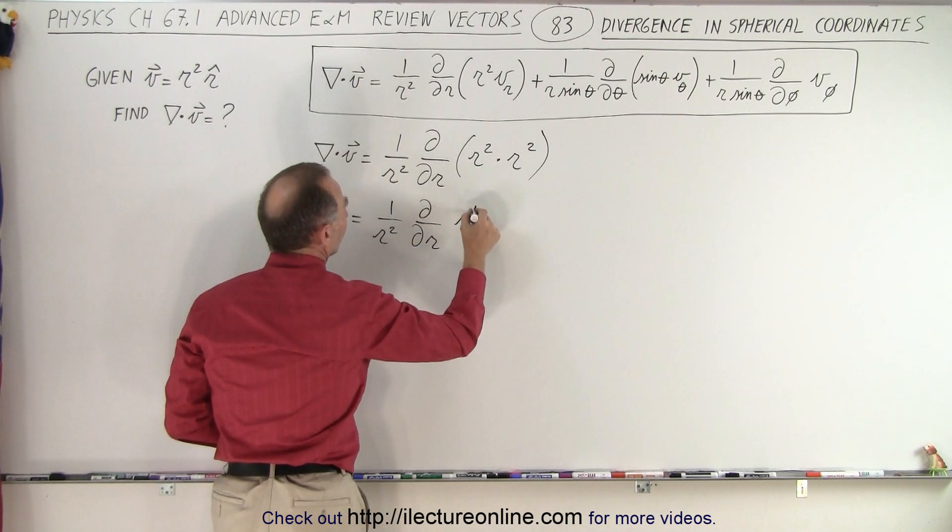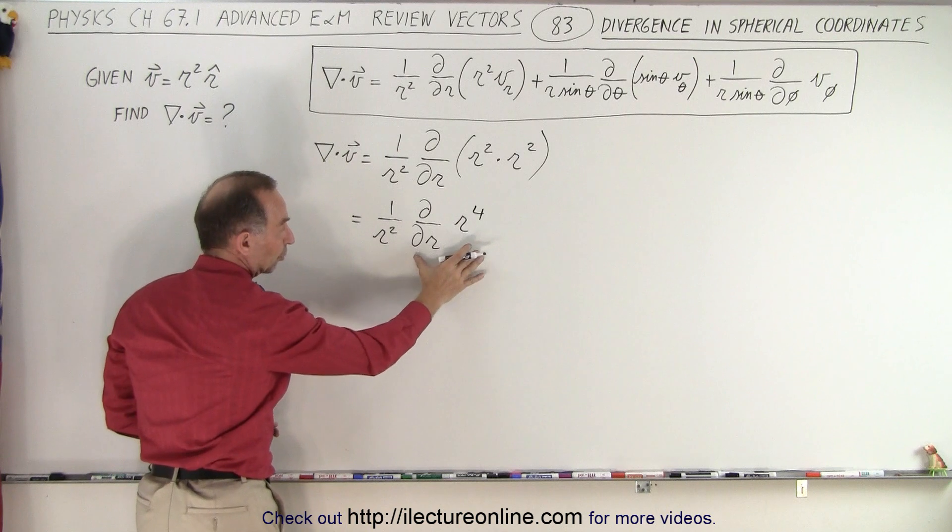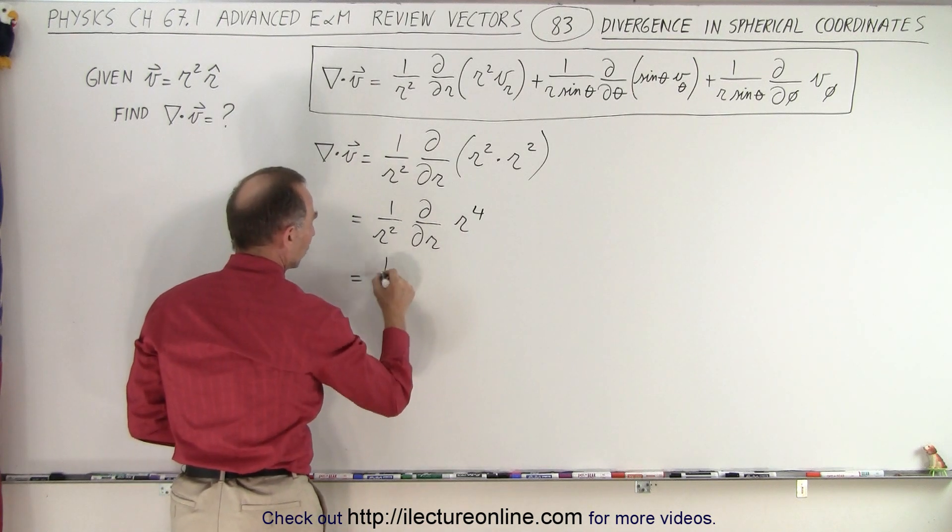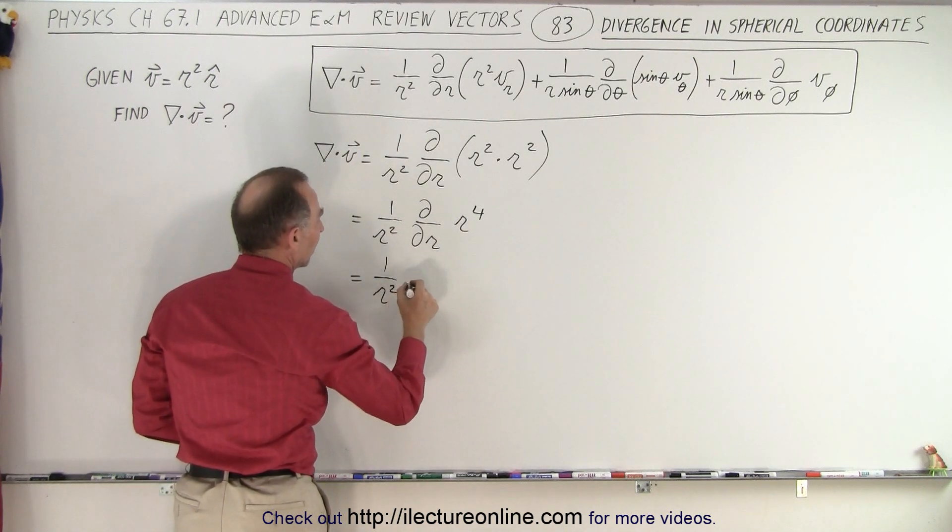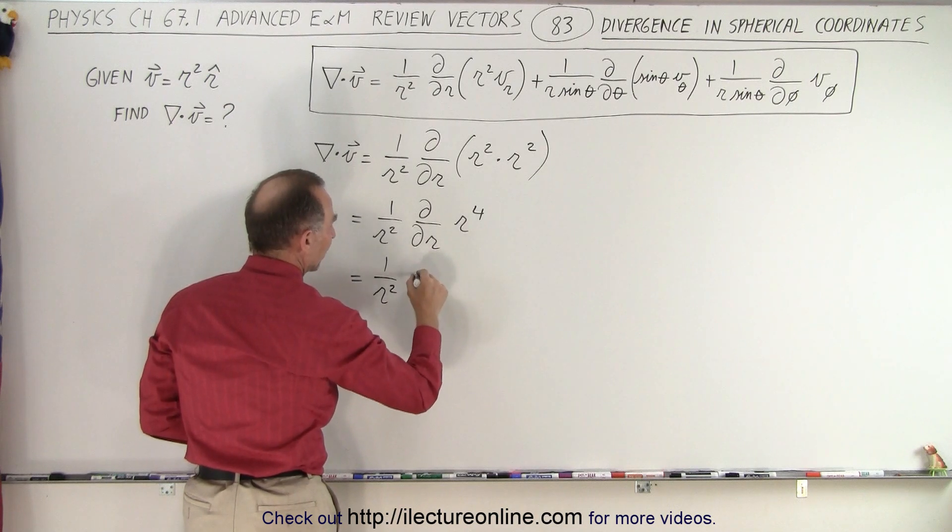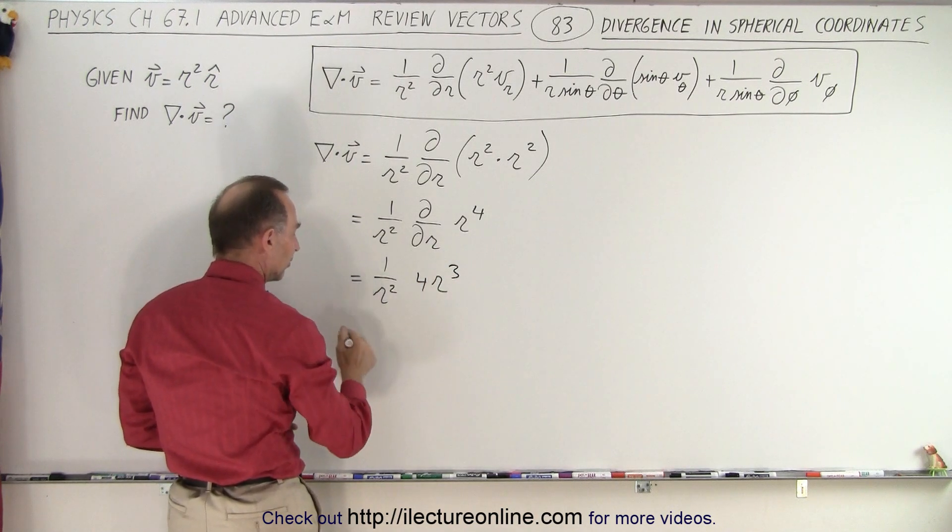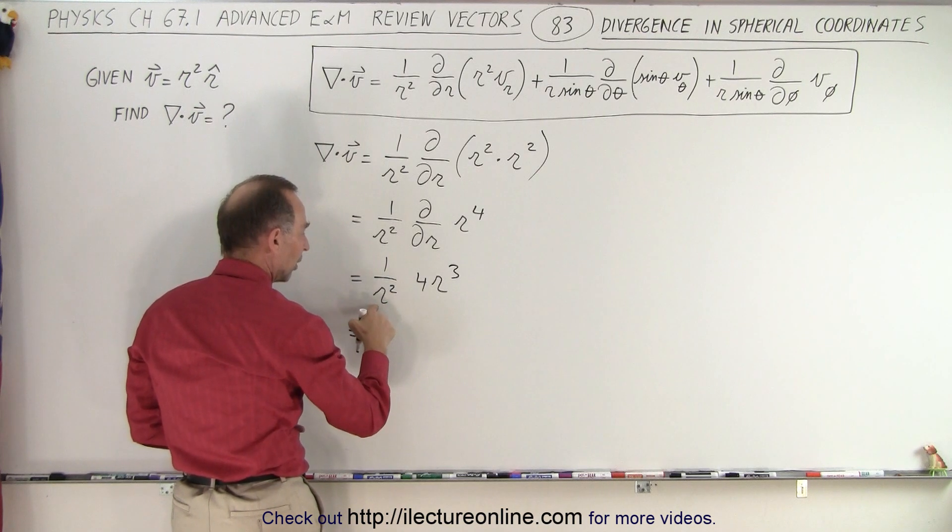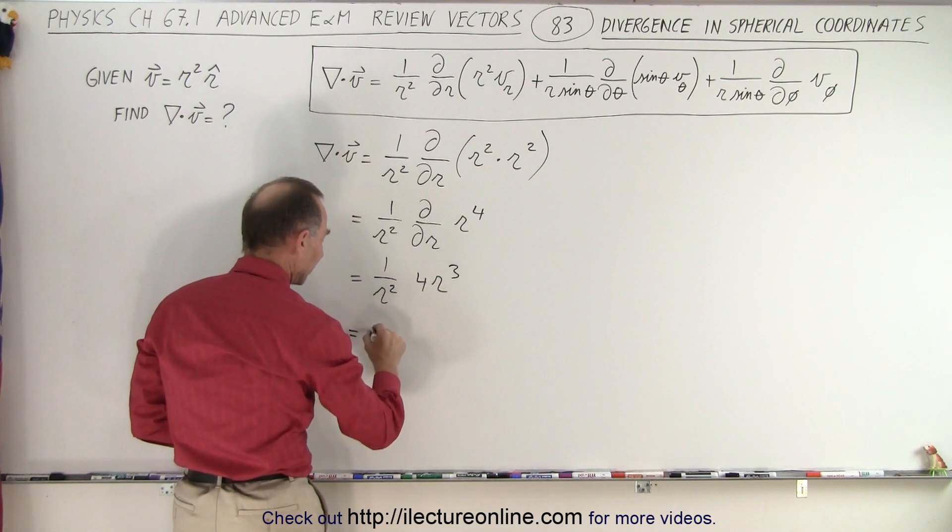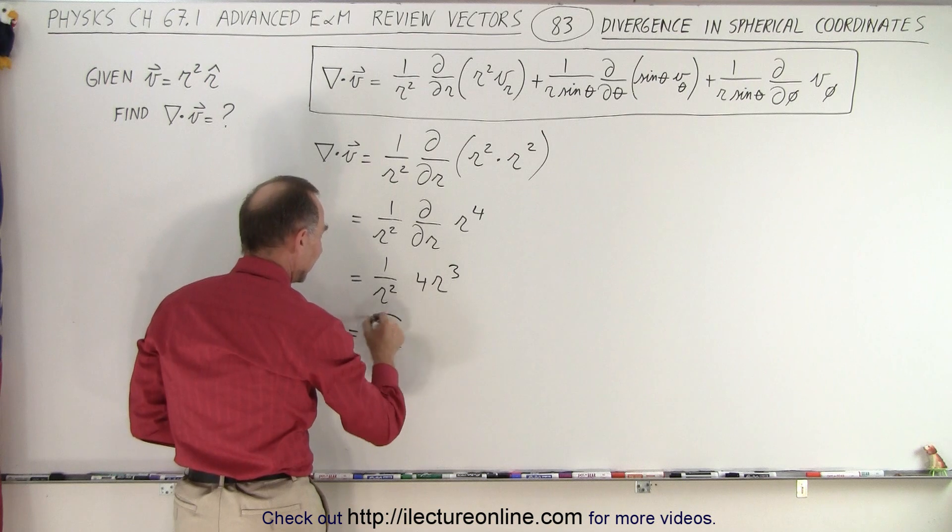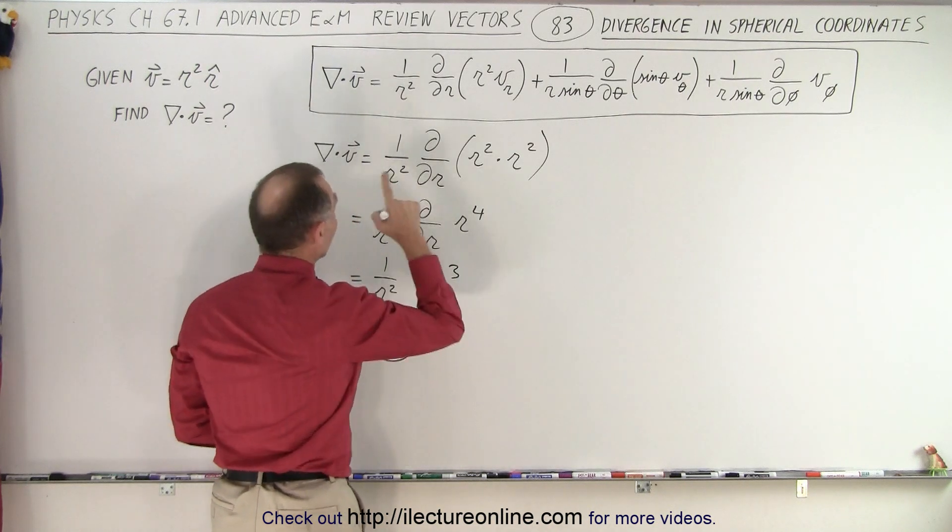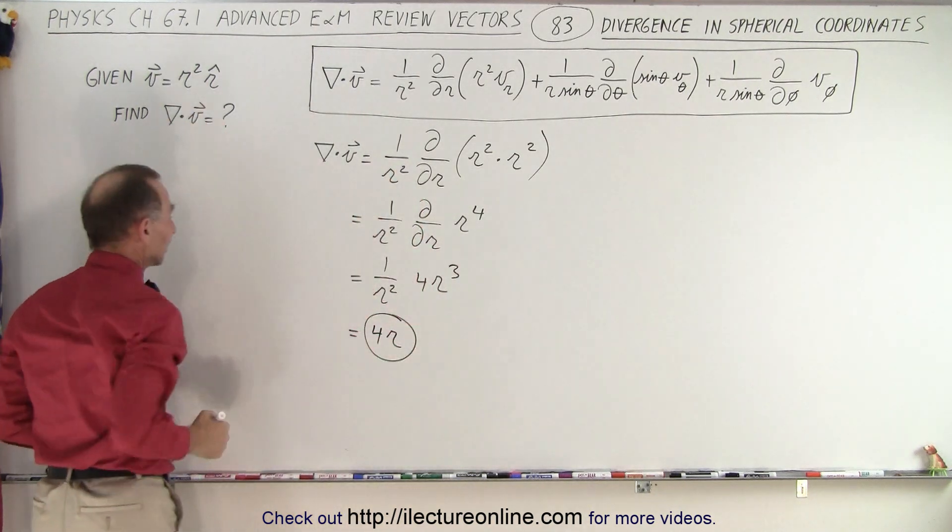Now we take the partial derivative of this first. This is 1 over r² times the derivative would be 4r³. And then when you multiply this out, this is equal to 4r, which is the divergence of our original vector.